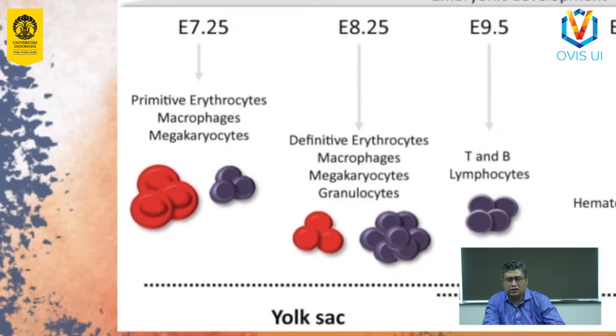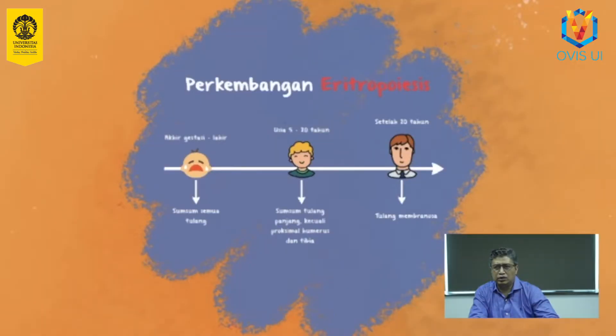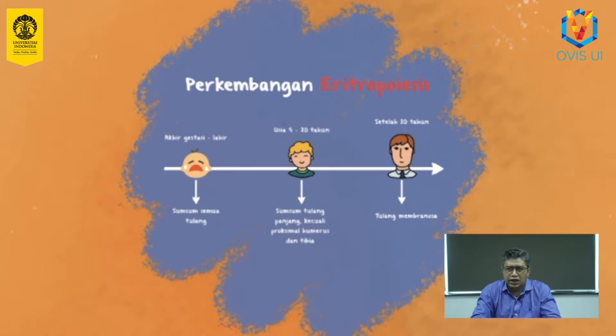Hematopoiesis definitif mulai terjadi di regio AGM. Sel hematopoietik kemudian berpindah ke plasenta, liver, dan limpa selama masa embrional. Liver merupakan lokasi hematopoiesis utama pada janin. Pada saat manusia lahir, terjadi beberapa perubahan pada proses pembentukan sel darah merah atau eritropoiesis. Pada akhir masa gestasi, sel darah merah hanya diproduksi di sumsum pada semua tulang. Seiring berjalannya waktu, eritropoiesis terbatas hanya terjadi pada sumsum tulang membranosa saja. Sumsum tulang pertama terbentuk pada tulang klavikula di akhir masa fetus dan menjadi aktif 3 minggu kemudian.